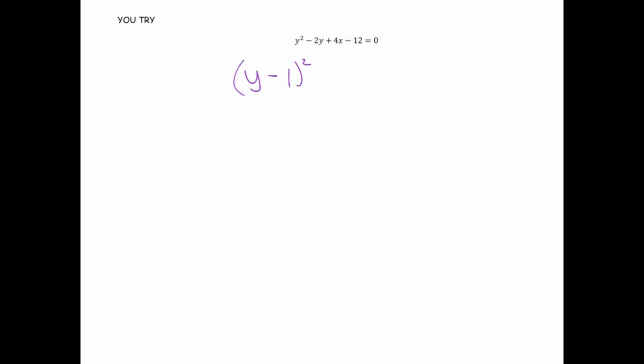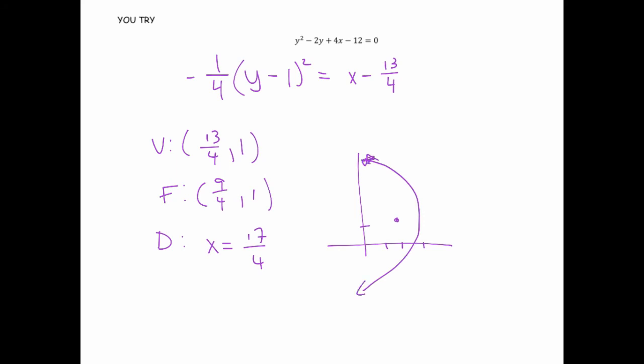So I'm assuming you did that, unpaused, and this is the equation I ended up getting. Not the prettiest of ones. The vertex ends up being at 13 fourths comma 1, the focus is at 9 fourths comma 1, and the directrix has equation x equals 17 fourths. And it tends to look something like this. I'm not going to do a perfect sketch here but you'll get the idea.